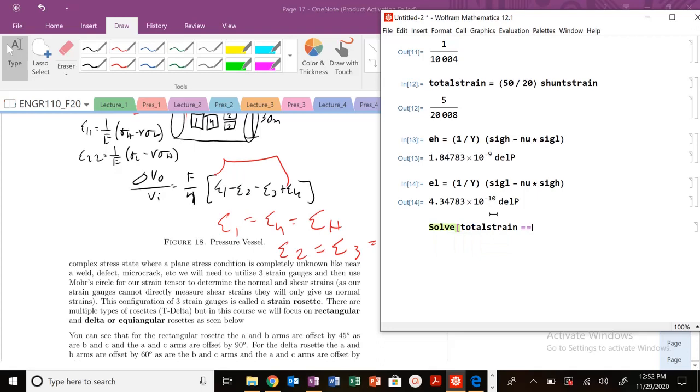Now all I have to do is just solve for when total strain, I know that's going to be equal to 2 times εH minus 2 times εL and solve for ΔP. That's it. That's my change in that pressure.